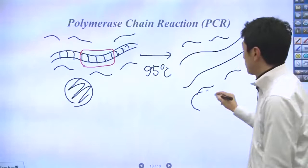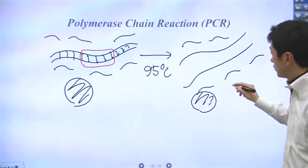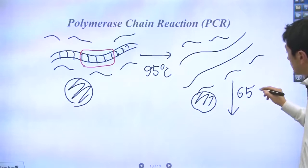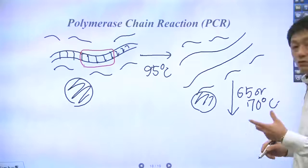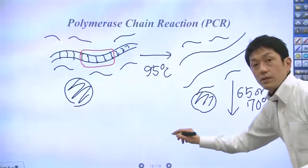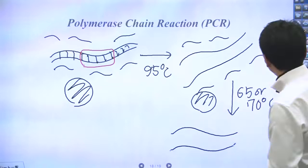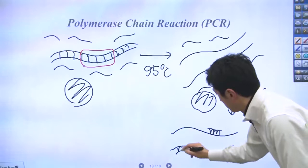Next, temperature is lowered to 65 or 70 degrees. The short-synthesized DNA oligonucleotides, we call them the primers, undergo hydrogen bonding with the target DNA and partially form double-stranded DNA. Like this.